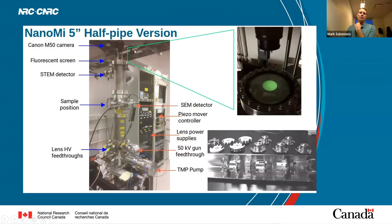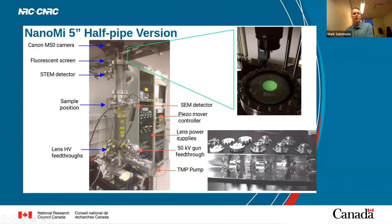For detection, we use a standard off-the-shelf camera with a phosphorescent screen. We built our own STEM detector, and for an SEM detector you can build your own — we put in an Everhart-Thornley detector that we had off the shelf, but those are fairly simple to build. We build all our own electronics here: piezo movers, lens power supplies — currently commercial but all can be built. We use a turbomolecular pump for vacuum, baking the system, and shooting for about 10 to the minus 10 Torr, with standard off-the-shelf high voltage feedthroughs.